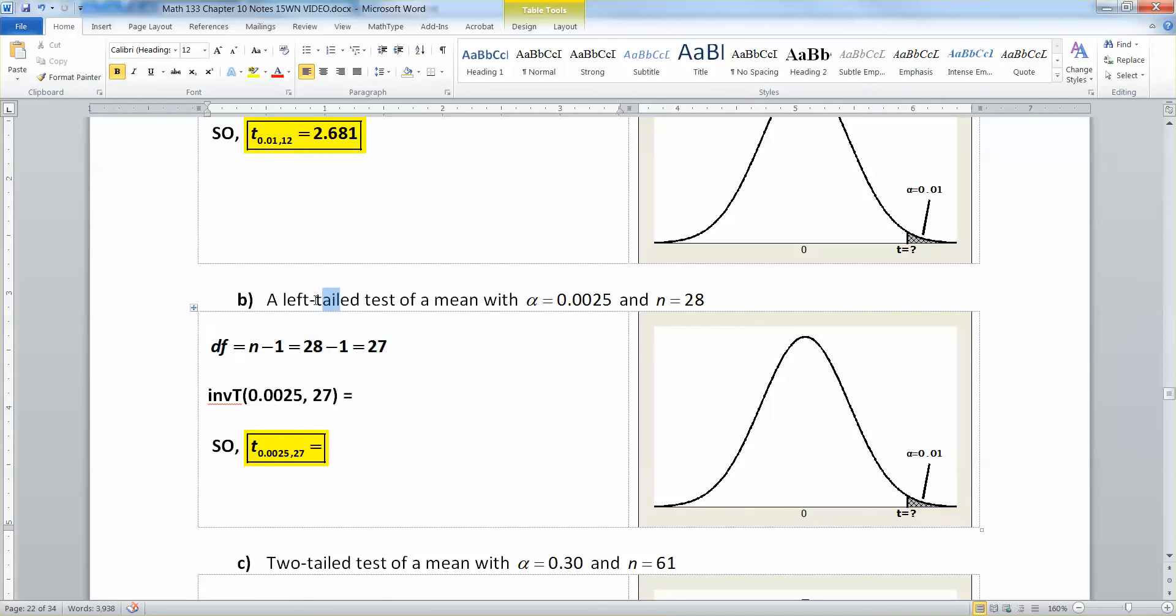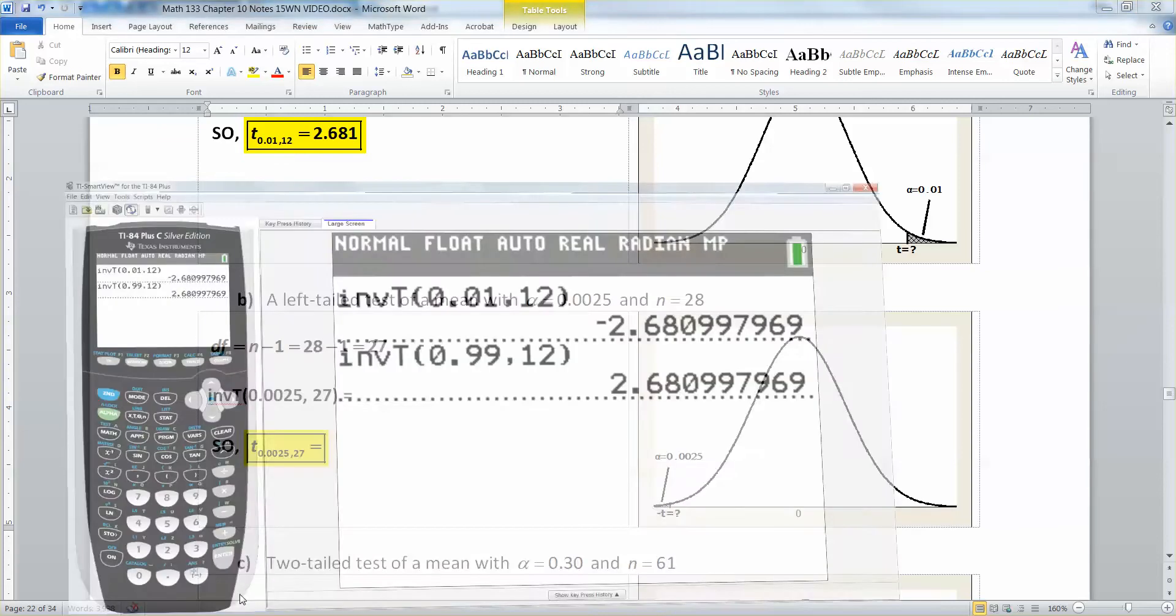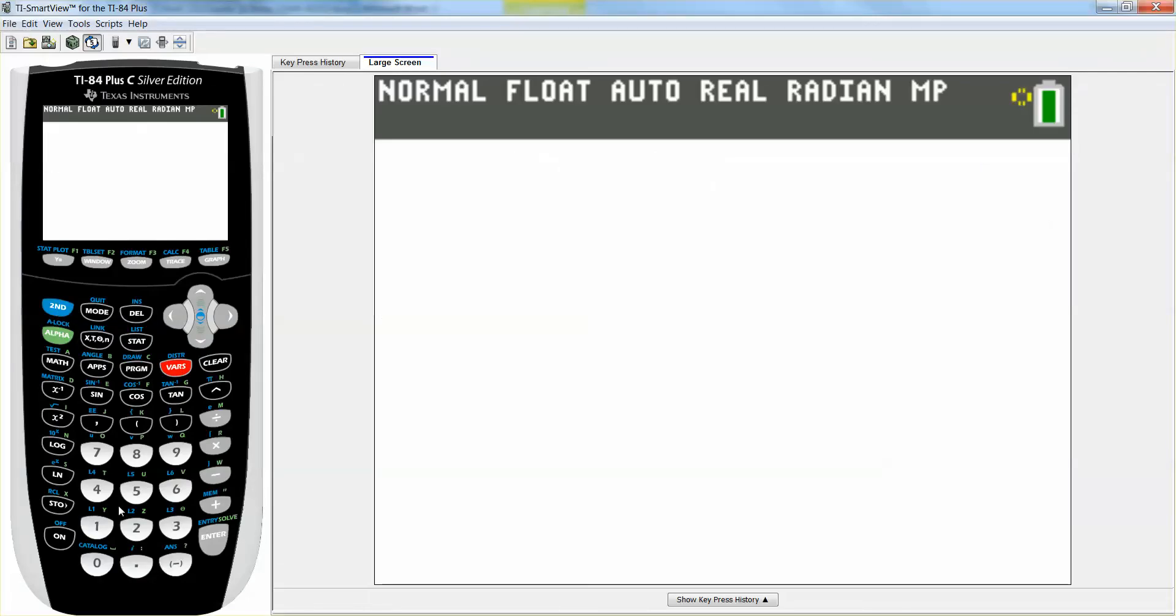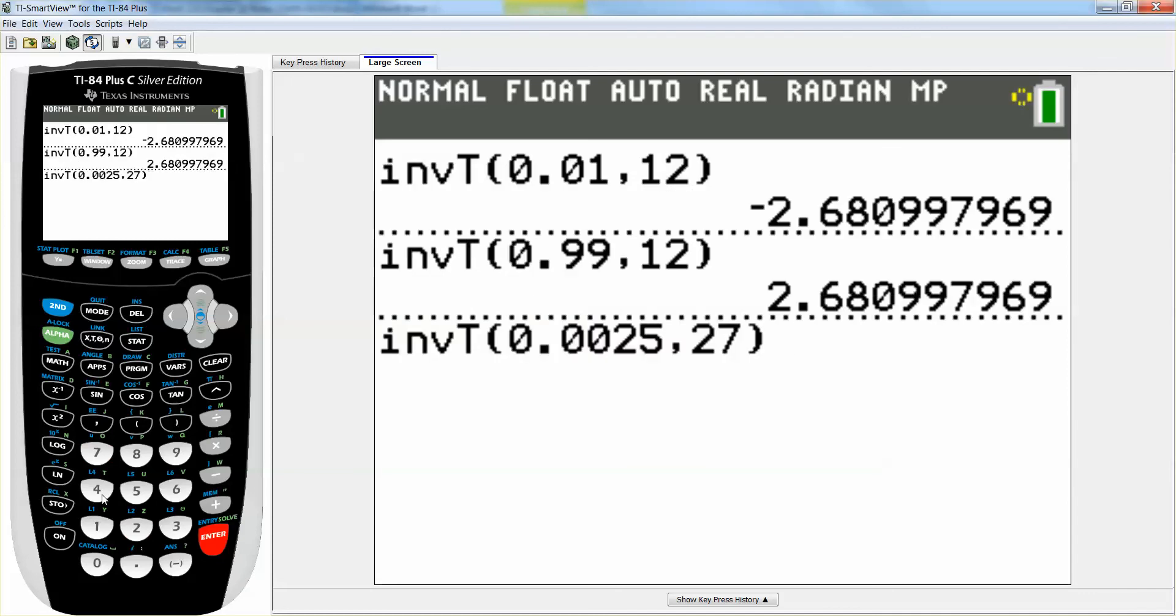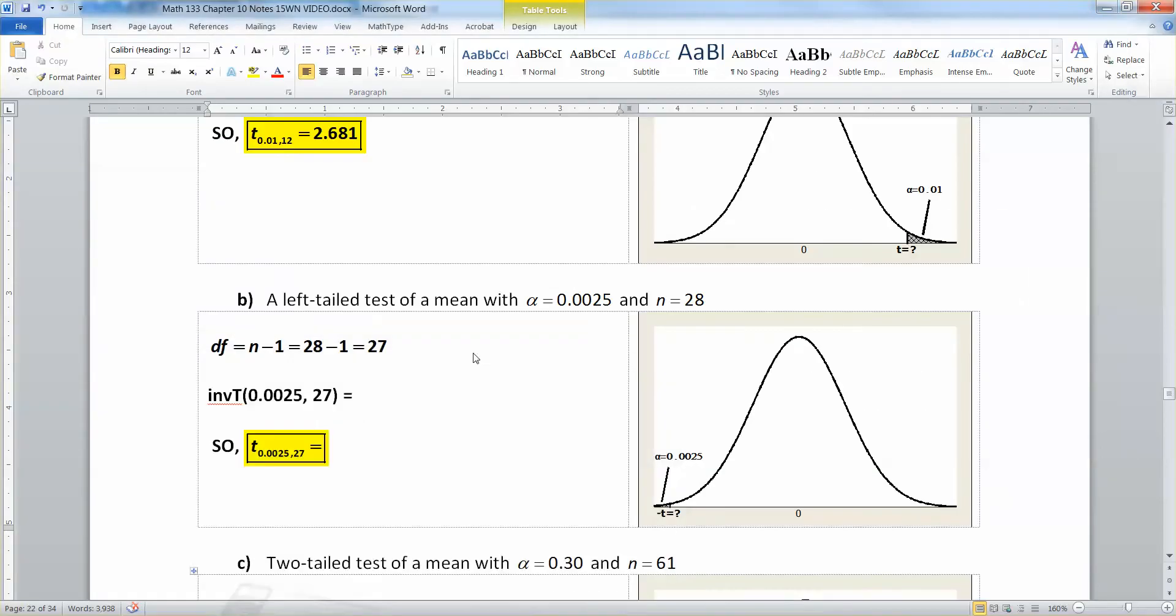Now this is a left tailed test, so my picture here is not correct. Let me fix that. All right, there we have it. So we have 0.0025. It's a very, very small tail that's shaded in over there. And the degrees of freedom is 27. So I want inverse T, 0.0025, 27, paste, and then press enter. And I get negative 3.057. So that's what I would have, negative 3.057.